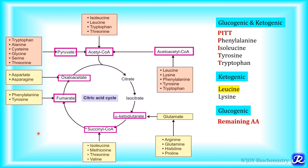Ketogenic amino acids are those whose carbon skeleton is converted either into acetyl-CoA or acetoacetyl-CoA. Fatty acids, ketone bodies, and cholesterol can be synthesized from acetyl-CoA, and acetoacetyl-CoA is itself a ketone body. Some amino acids are both glucogenic and ketogenic — those whose carbon skeleton yields TCA cycle intermediates in addition to acetyl-CoA or acetoacetyl-CoA. There are four such amino acids, remembered as PIIT: phenylalanine, isoleucine, tyrosine, and tryptophan. Two amino acids are exclusively ketogenic — leucine and lysine — and all other remaining amino acids are glucogenic.